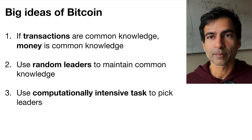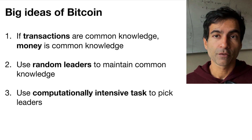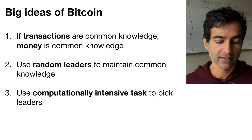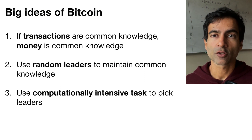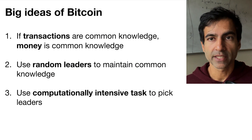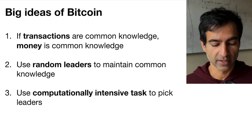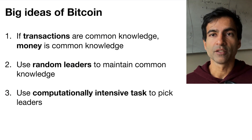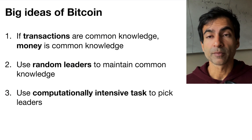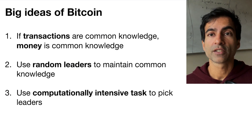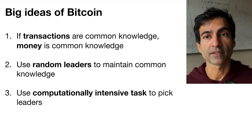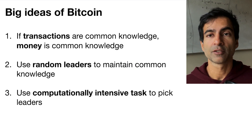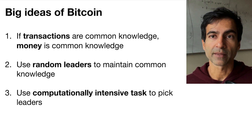So that's it. Bitcoin has three big ideas: the idea that if transactions are common knowledge then money is common knowledge, the use of random leaders to maintain the common knowledge, and the use of a computationally intensive task to pick random leaders. I hope you found that informative.